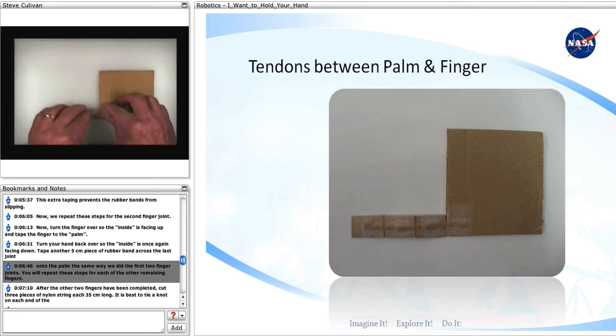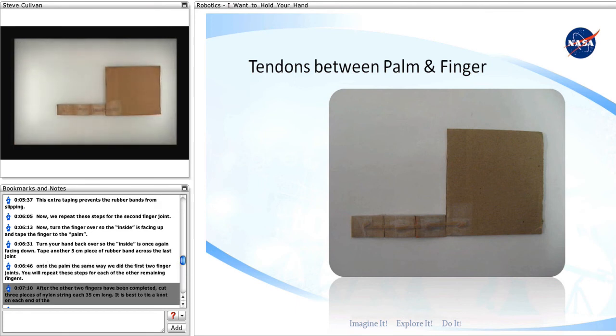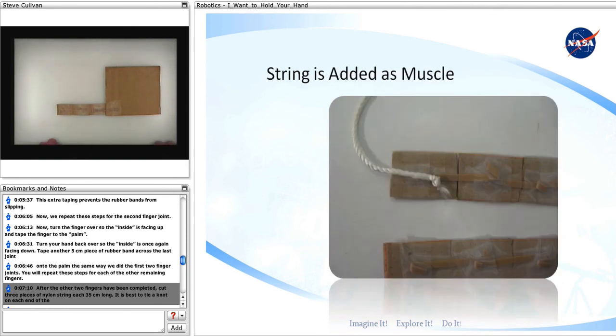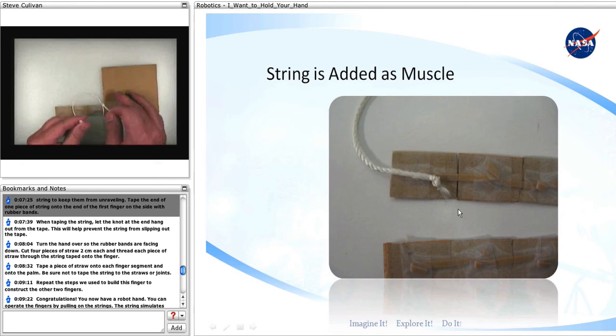You will repeat these steps for each of the other remaining fingers. After the other two fingers have been completed, cut three pieces of nylon string 35 centimeters long. It is best to tie a knot on each end of the string to keep them from unraveling.